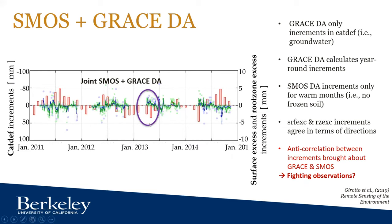Another challenge encountered when combining SMOS and GRACE was that the increments showed opposite signs: red bars from GRACE in catchment deficit, versus blue and green SMOS increments in surface and root zone soil moisture, showing anti-correlation. Even though the combined assimilation performed best, we observed these observations fighting against each other. That is a problem we identified but did not fully solve.